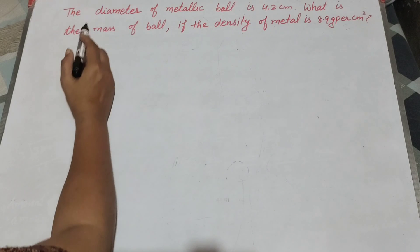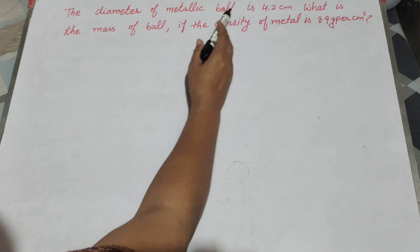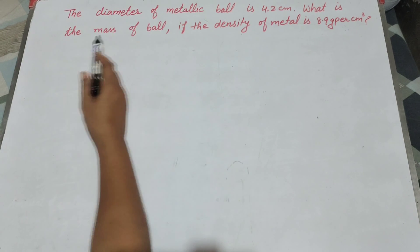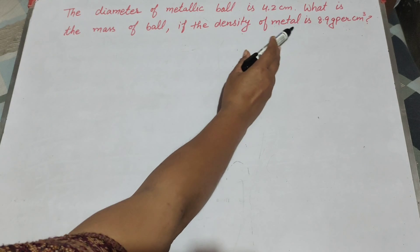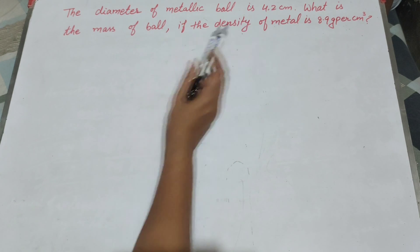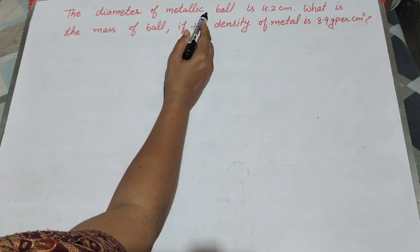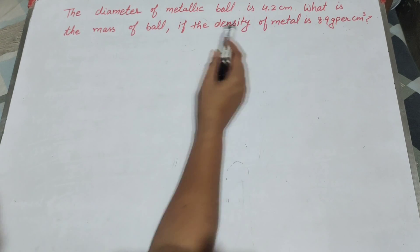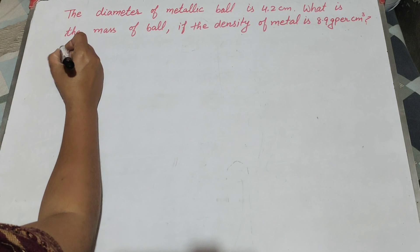Hello friends, welcome to my channel. In this video we discuss: the diameter of a metallic ball is 4.2 centimeters. What is the mass of the ball if the density of metal is 8.9 grams per centimeter cube? In this question, given is the diameter of the metallic ball — 4.2 centimeters — and the density of the metal ball. We find the mass of the ball.